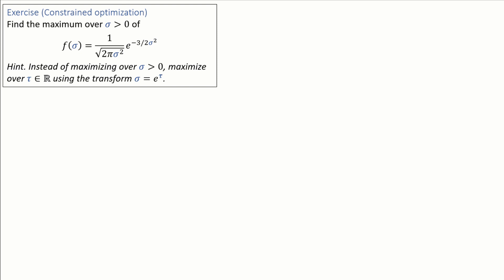The hint tells us how: optimize over some other variable tau allowed to be positive or negative, and transform it into sigma by setting sigma equals e to the tau. Now we can get to any valid sigma at all by choosing the right tau, so we're not restricting ourselves by this, and the transform ensures that we will only ever look at positive sigma.